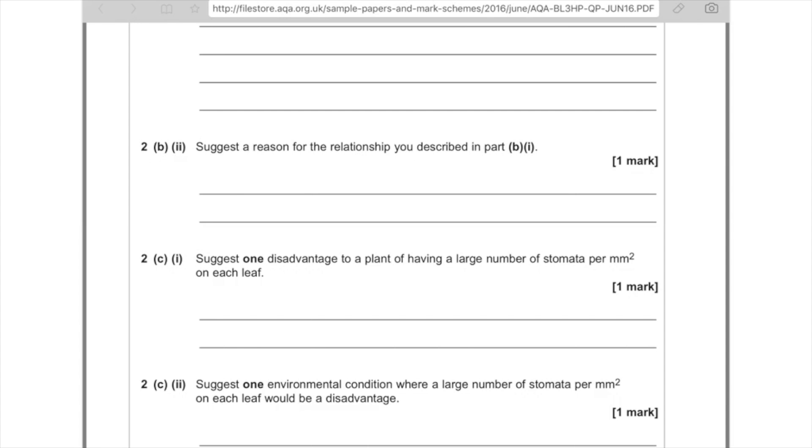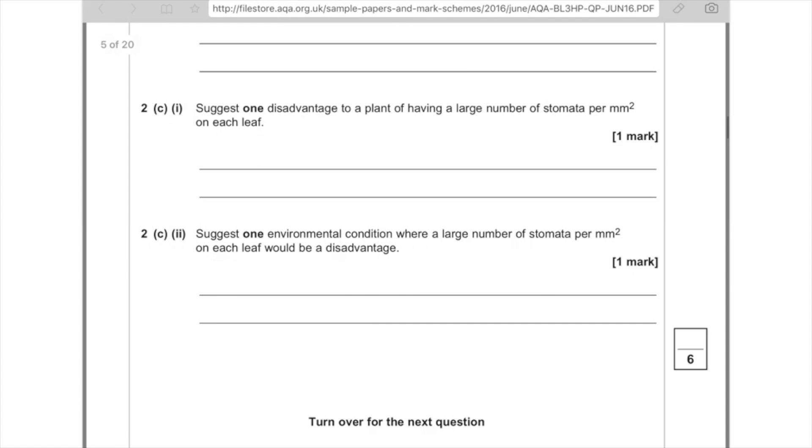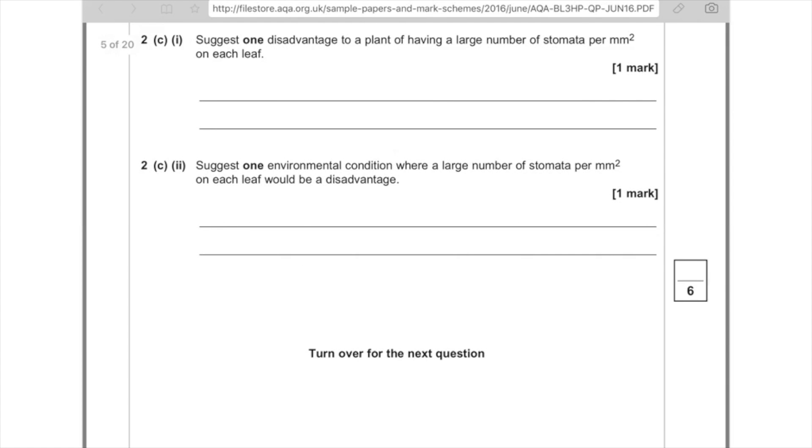So just one disadvantage to a plant of having a large number of stomata per millimeter squared on each leaf. I just talked about the fact that as well as carbon dioxide entering, water leaves. Now, if you have a lot of stomata opening, then a lot of water is going to be leaving. And the issues with lots of water leaving the plant is the plant will potentially begin to wilt and it will lose too much water.